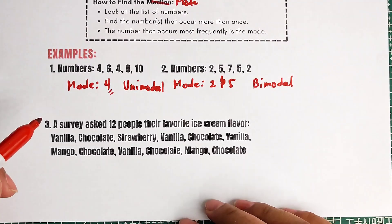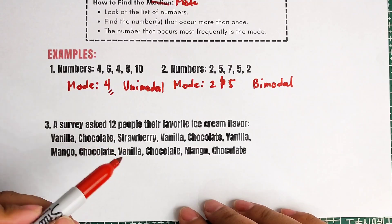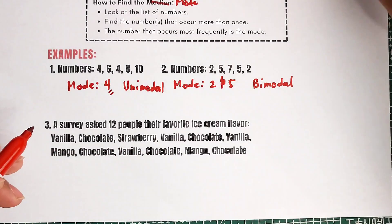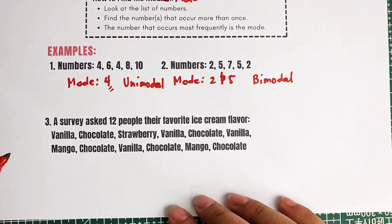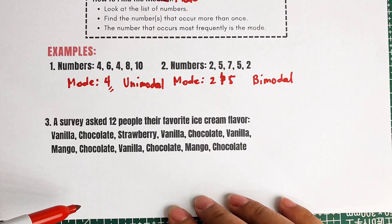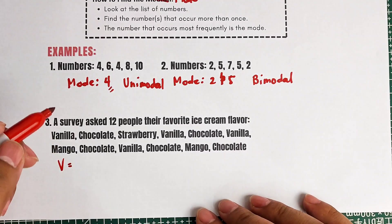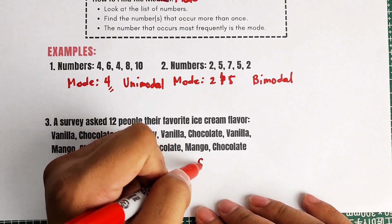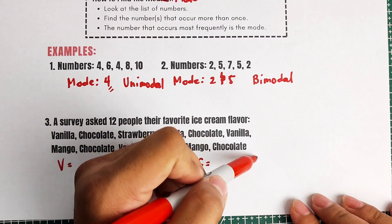For number 3, a survey asks 12 people their favorite ice cream flavors. The answers are: vanilla, chocolate, strawberry, vanilla, chocolate, vanilla, mango, chocolate, vanilla, chocolate, mango, and chocolate. To know the mode, we list down or tally the number of people who voted for each flavor. Let's use V for vanilla, C for chocolate, S for strawberry, and M for mango — we have four different flavors.